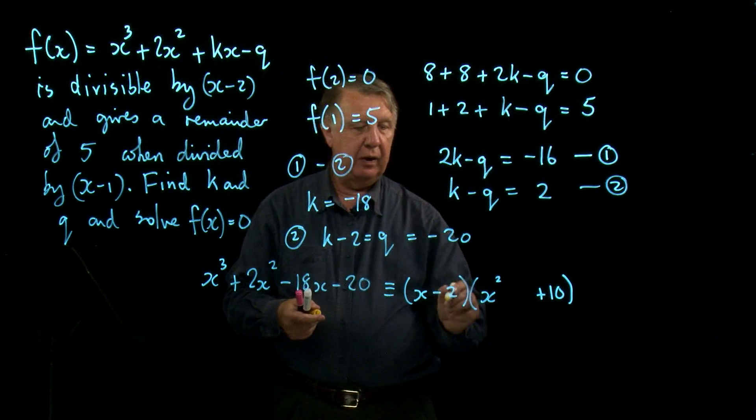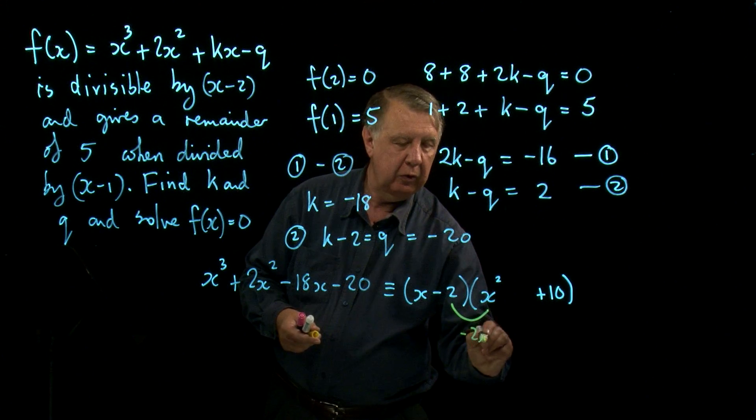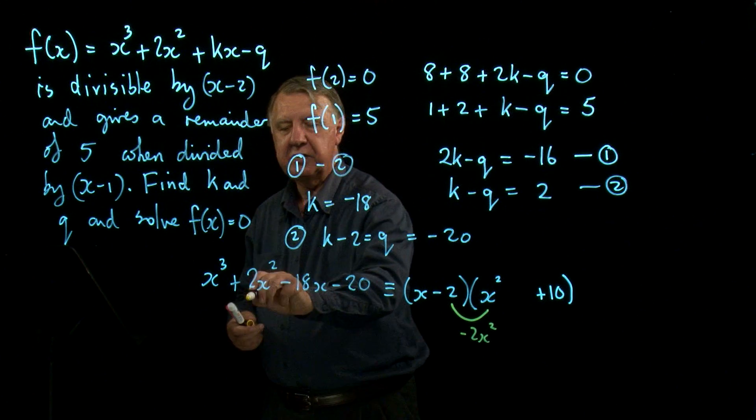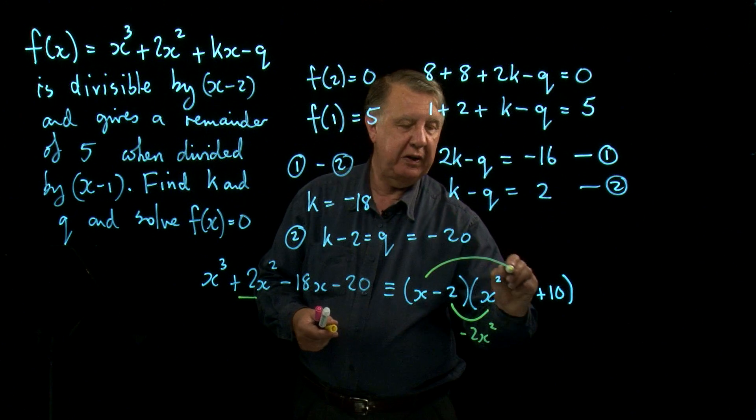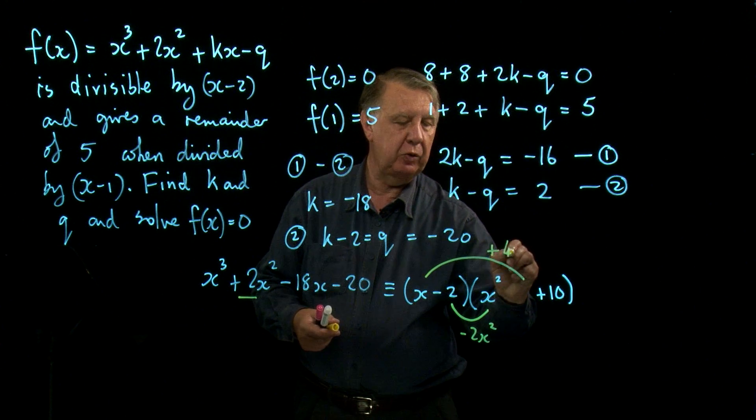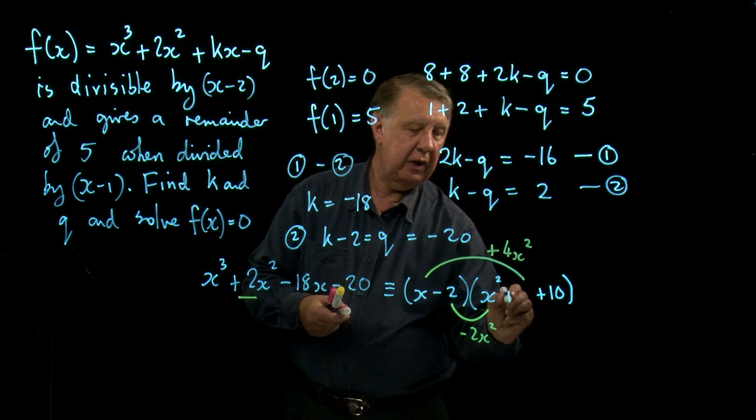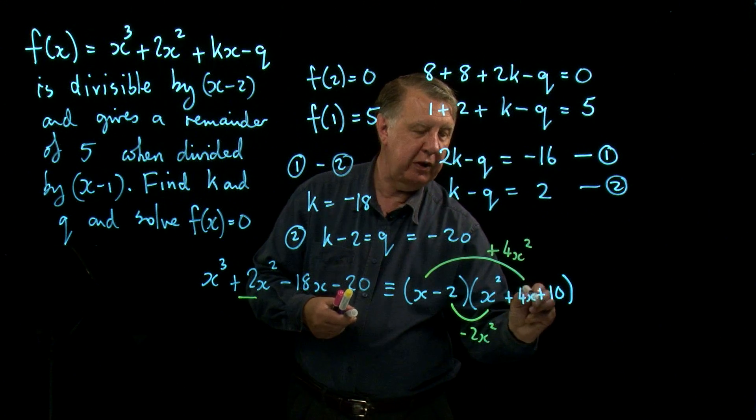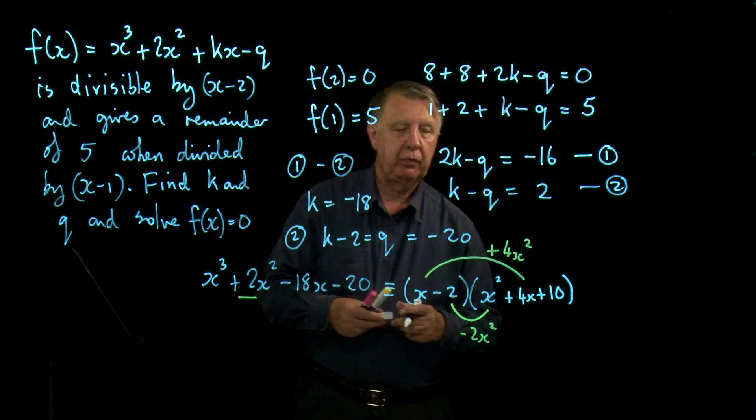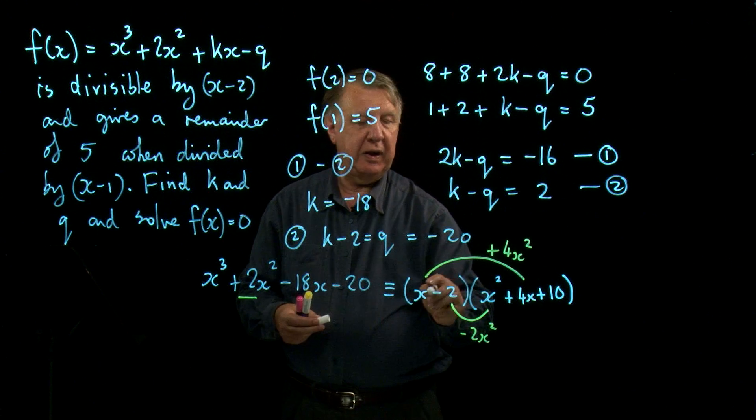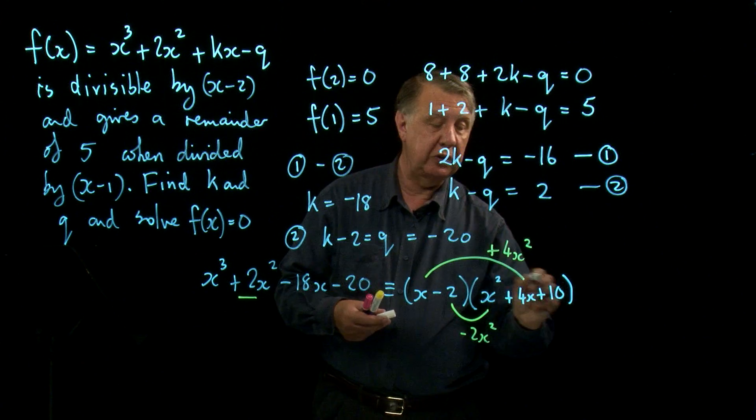Now, I've got negative 2x squared. I need to get plus 2 which means that must be plus 4x squared. How do I get that? I get it if that's plus 4x.